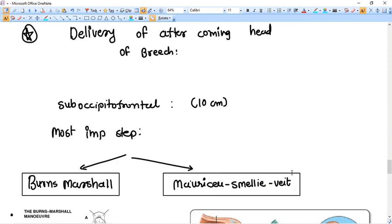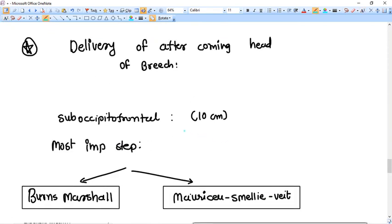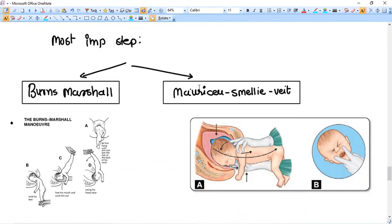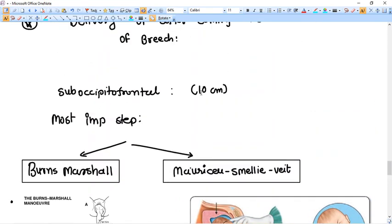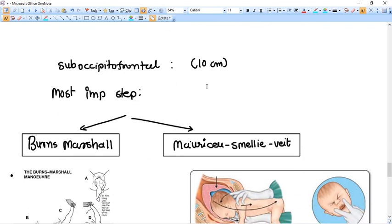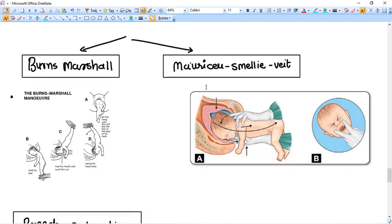Now let's go for third. Delivery of the after coming head of breech. This step is very important and vital step. Most of the time the diameter engaging is suboccipitofrontal diameter that is around 10 to 11 centimeters. So in this case we have two similar like maneuvers available. The first one is Burns Marshall method.